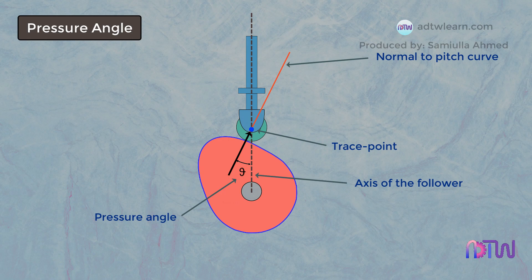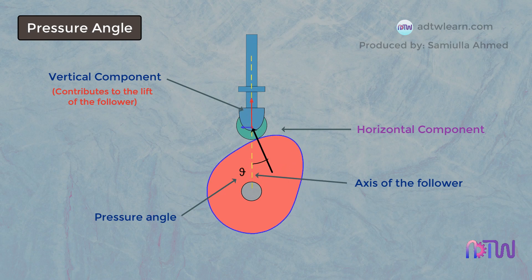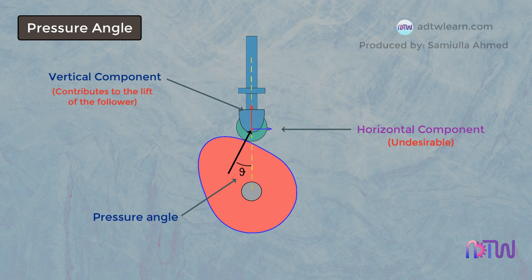We can see that the force acting on the follower by the cam is in this direction. This force has two components, one is vertical and the other is a horizontal component. The magnitude of these components is varying during the operation. Only the vertical component contributes to the lift of the follower whereas the horizontal component is undesirable. Therefore very large pressure angle is not desirable as it increases the horizontal component and can jam the follower in its bearing. For the smooth movement of the follower, the pressure angle should be less than the allowable value.